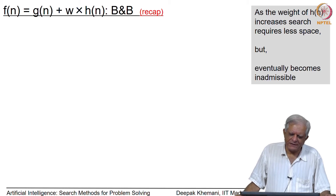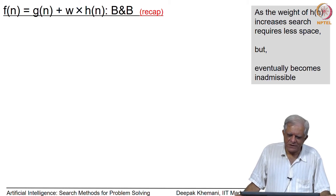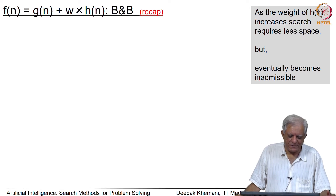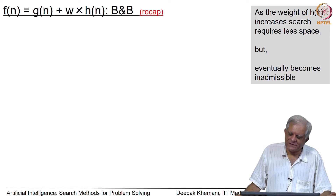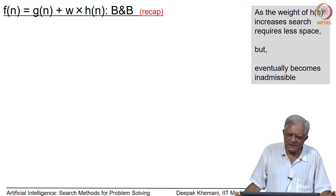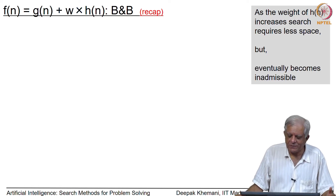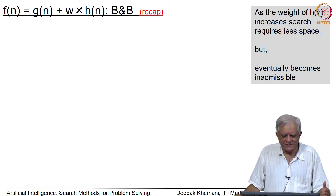If you generalize A*, best first search, branch and bound, and weighted A*, all of them can be captured by the one function g(n) + w·h(n). As w varies, the behavior of the algorithm changes — as w increases it requires less and less space, but as we saw in the case of weighted A*, it becomes eventually inadmissible.